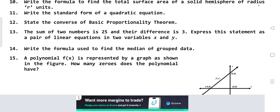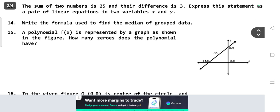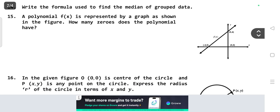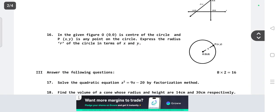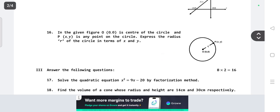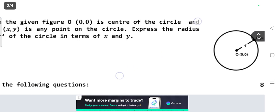Write the formula to find the median of grouped data. A polynomial f(x) is represented by a graph as shown in the figure, how many zeros does the polynomial have? Question number 16: In the given figure, O(0,0) is the center of a circle and P(x,y) is a point on the circle, express the radius r of the circle in terms of x and y.